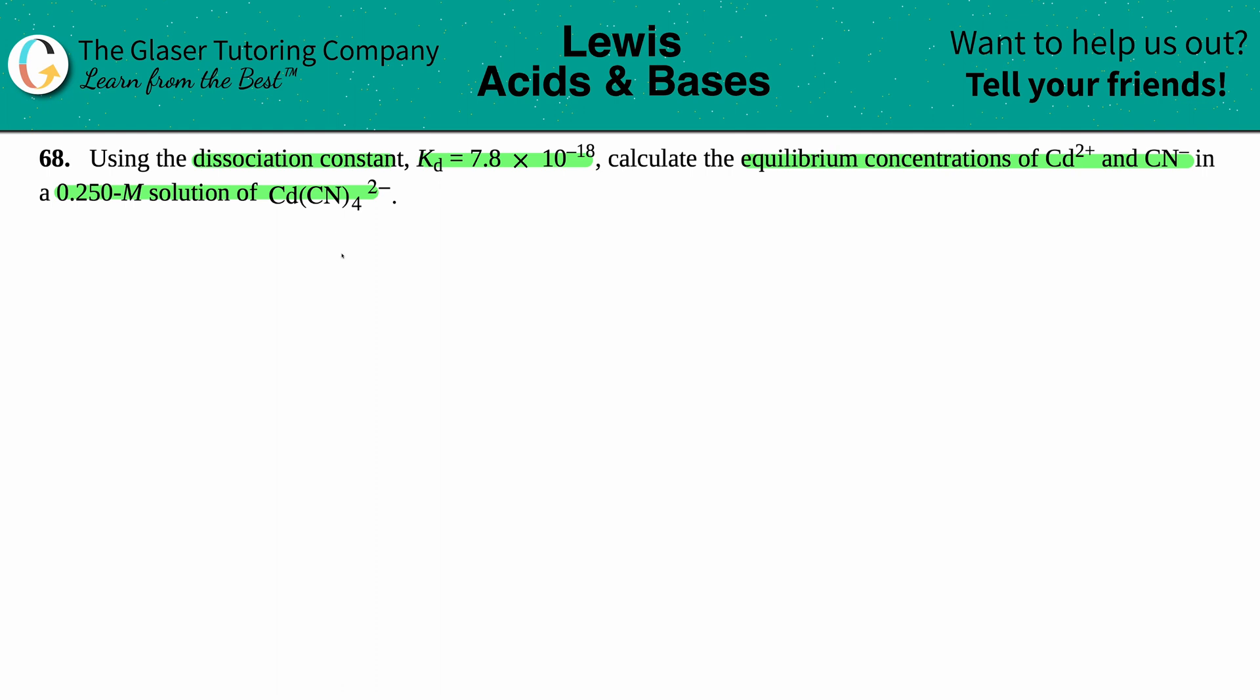We're dealing with dissociation constants Kd's, which are used with complex ions. Complex ions generally have a metal combined with a polyatomic, and together they form one whole ion. Here is our complex ion: Cd is the metal, CN is the polyatomic, and overall they have a negative two charge. If we're using the dissociation constant Kd, that means these complex ions will break down.